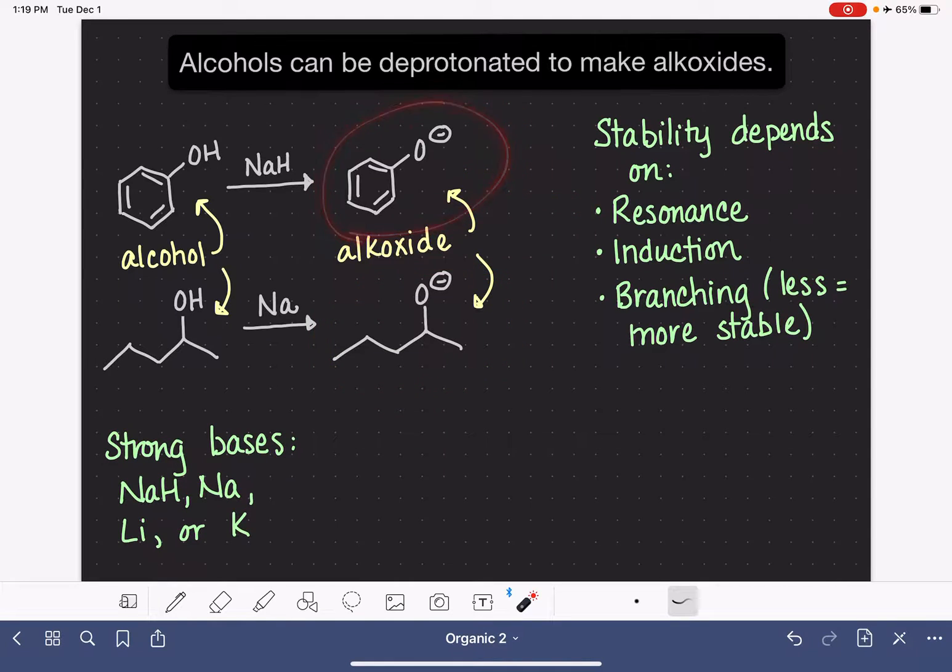So we know that this is a more stable alkoxide, and if we can identify the more stable of a set of alkoxides, that gives us information about the relative acidity of the alcohols that were used to generate those alkoxides.